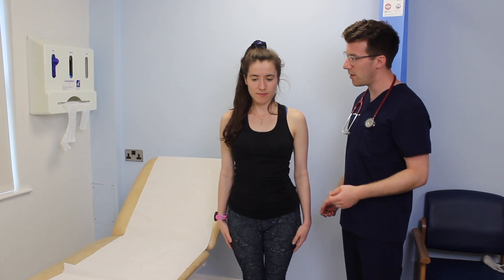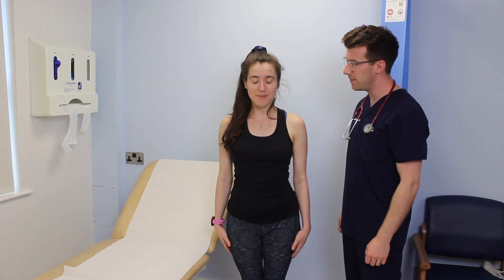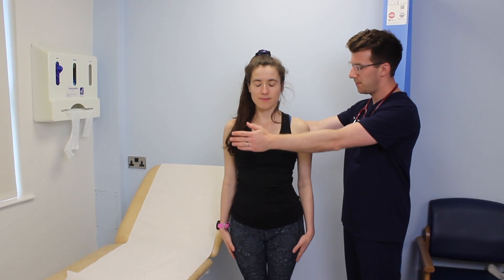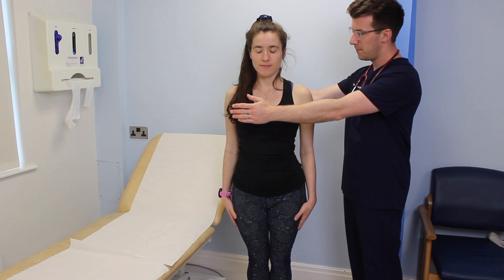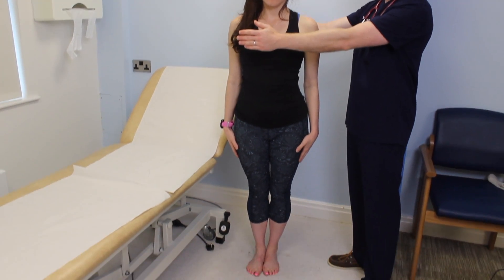Whilst the patient is standing, you could also perform a Romberg test. This is a good screening test to distinguish cerebellar defects from sensory ataxia, i.e. loss of proprioceptive or vestibular function. To do this, ask the patient to stand up with the feet together. However, be ready to catch them in case they fall.